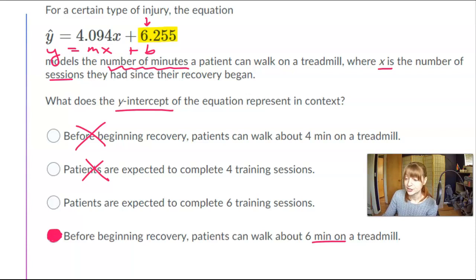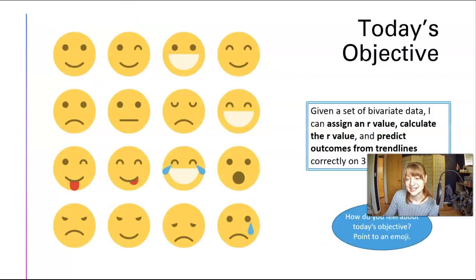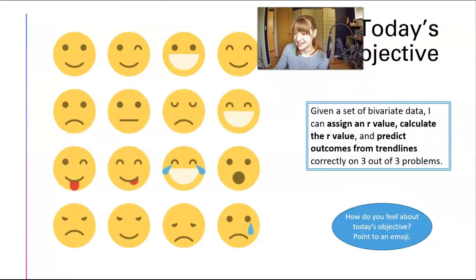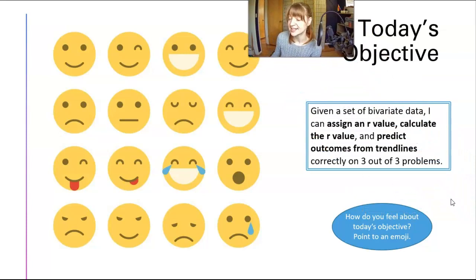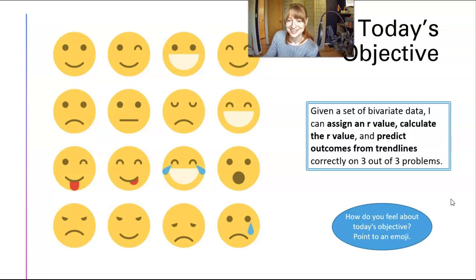That is everything on today's objective: given a set of bivariate data, I can assign an R value, calculate the R value, and predict outcomes from trend lines correctly on three out of three problems. Think about which emoji best represents you now.